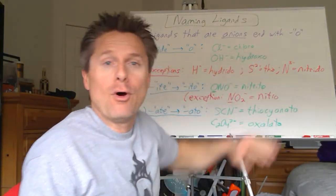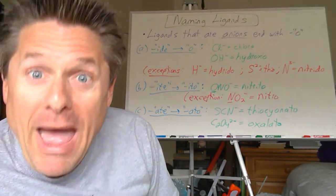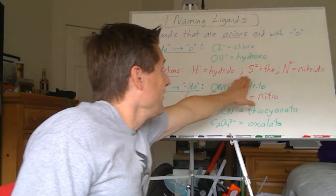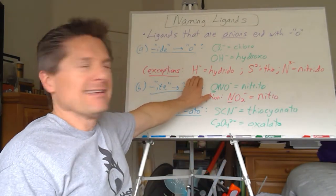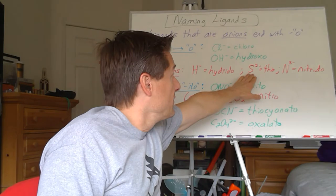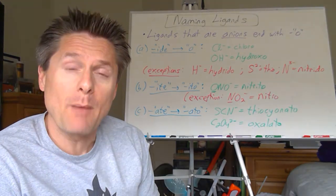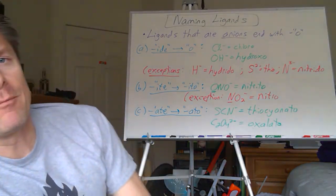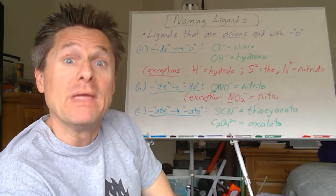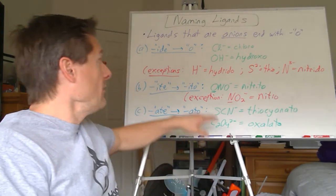Any anion with the -ide suffix, we just change that to -o. So chloride becomes chloro, fluoride becomes fluoro, bromide becomes bromo, iodide becomes iodo, hydroxide becomes hydroxo. The exceptions are hydride, sulfide, and nitride. Hydride would otherwise be 'hydro,' which sounds like water, so they make it hydrido. Sulfide uses 'thio' from organic chemistry. And nitride becomes nitrido — not nitro — to avoid confusion with another term.